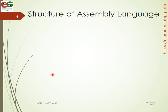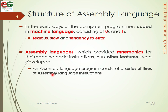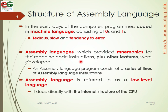In the early days of computing, programmers coded in machine language consisting of 0s and 1s. Assembly languages were developed to provide mnemonics for machine code instructions, making them easier for humans to work with. Assembly language is referred to as a low-level language because it deals directly with the internal structure of the CPU.